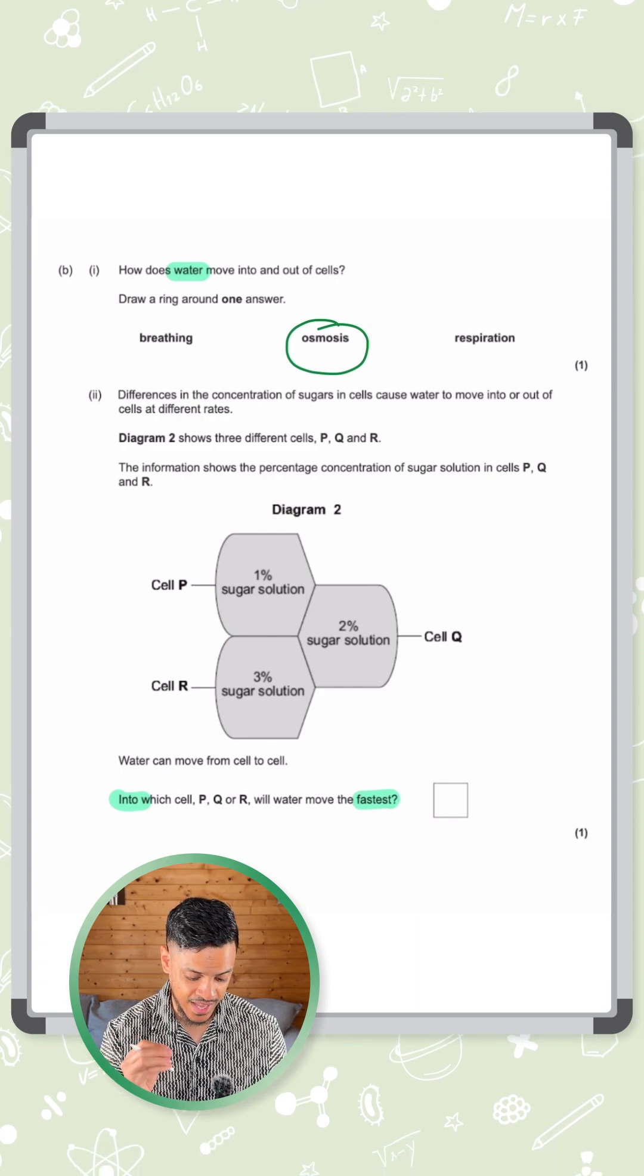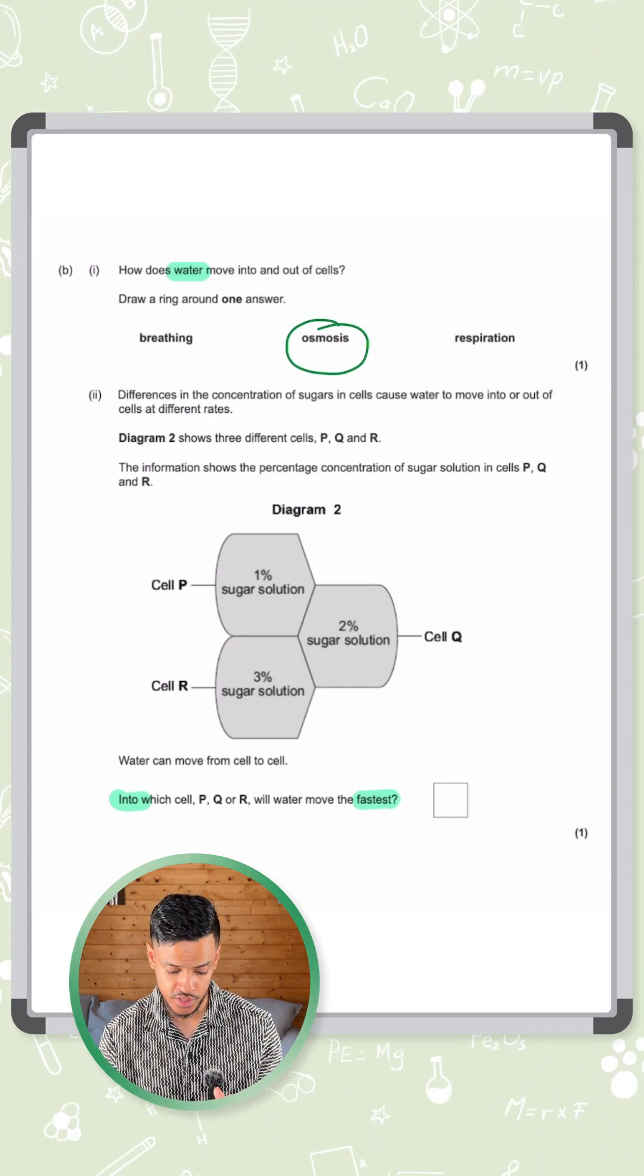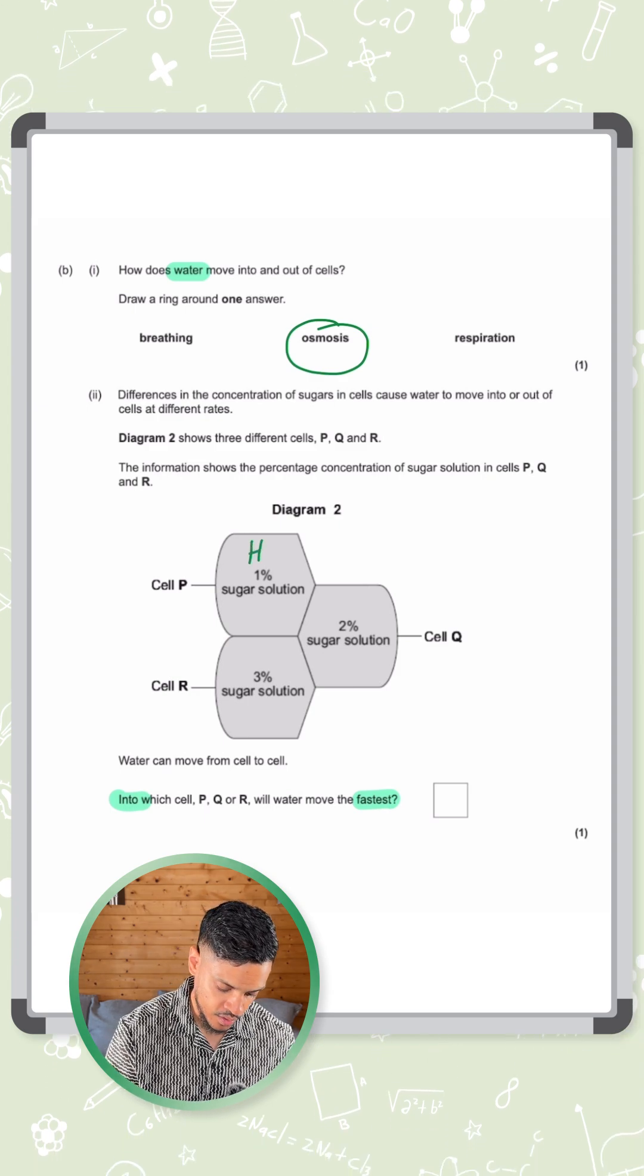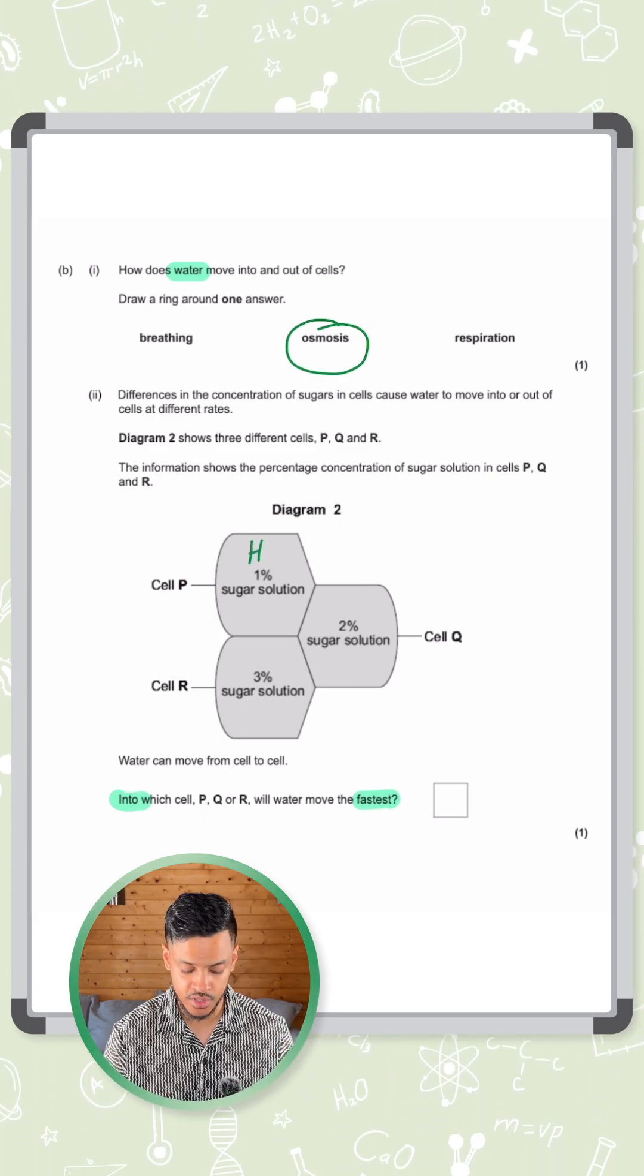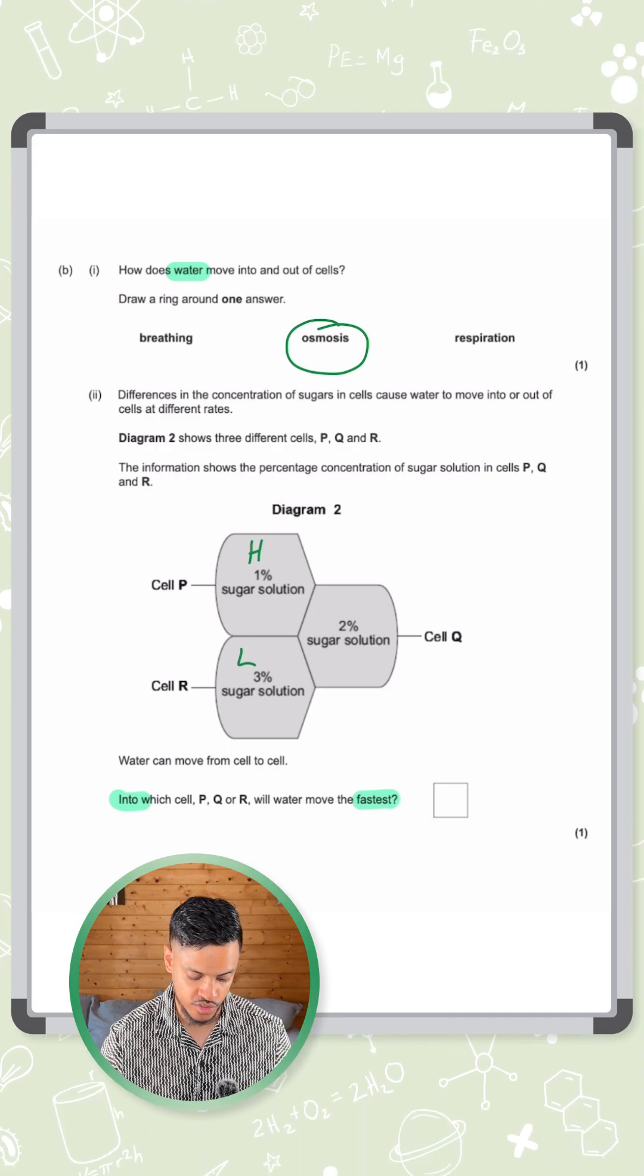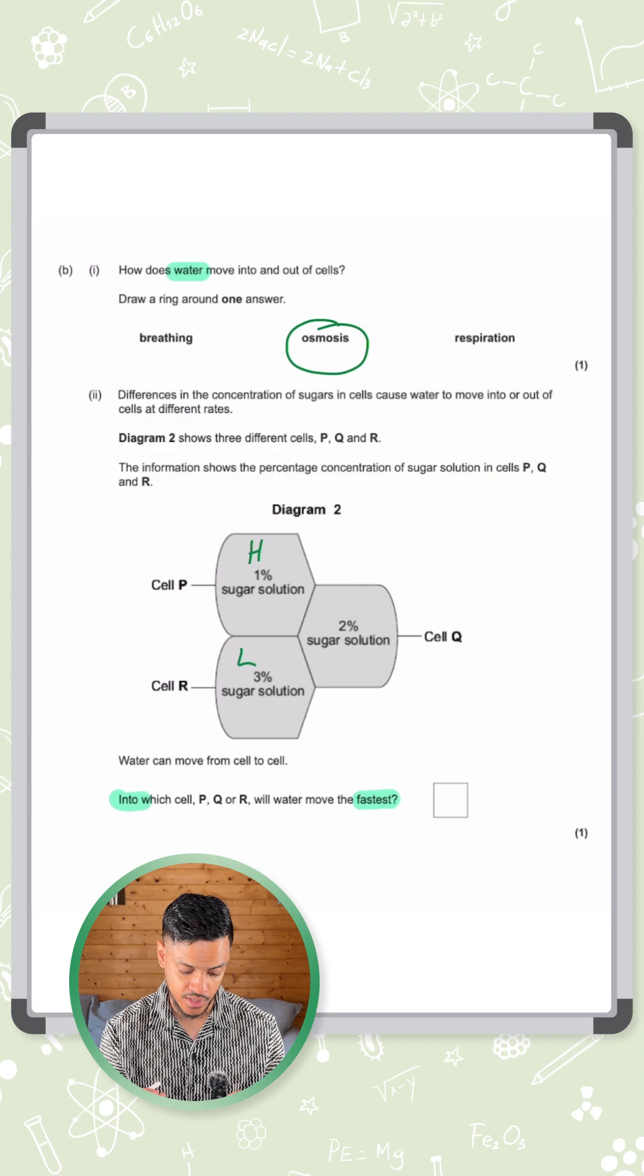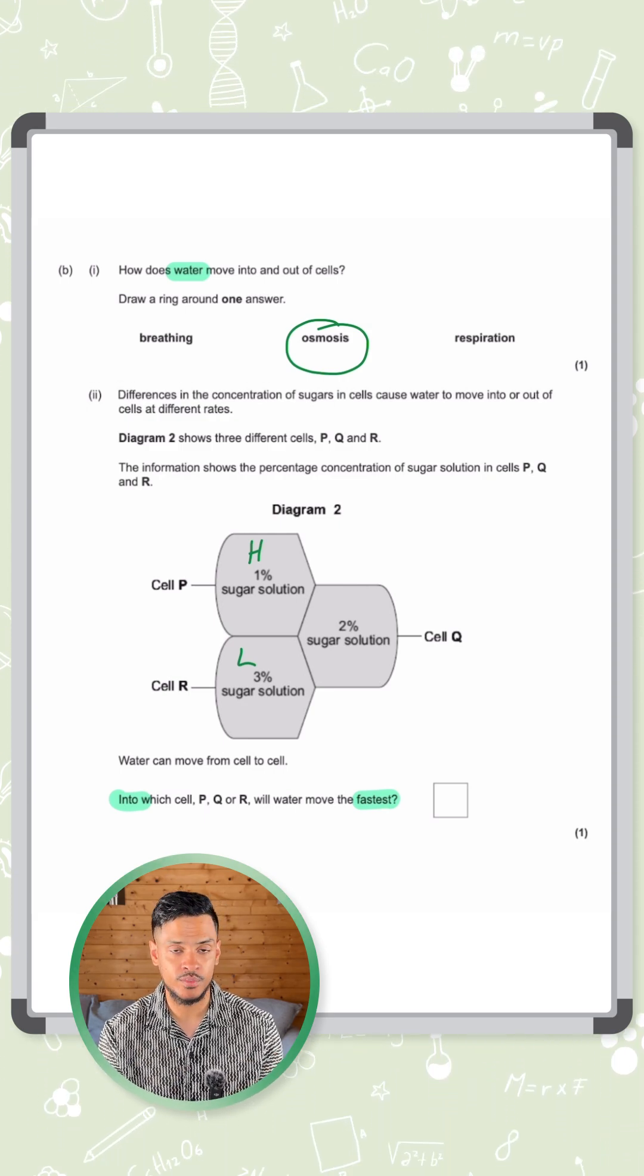The more water there is, the more dilute the solution is, therefore the higher the water concentration. So which of these has the highest water concentration and which has the lowest? The one percent one would have the highest water concentration. The three percent one would have the lowest water concentration because it's got more sugar in it, so it's less space for water.